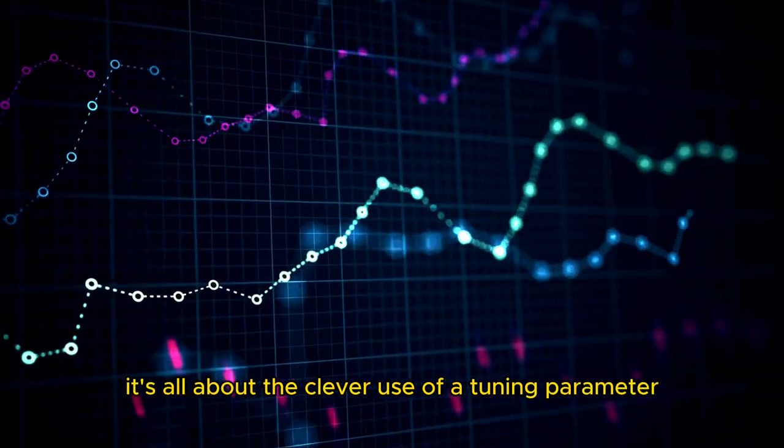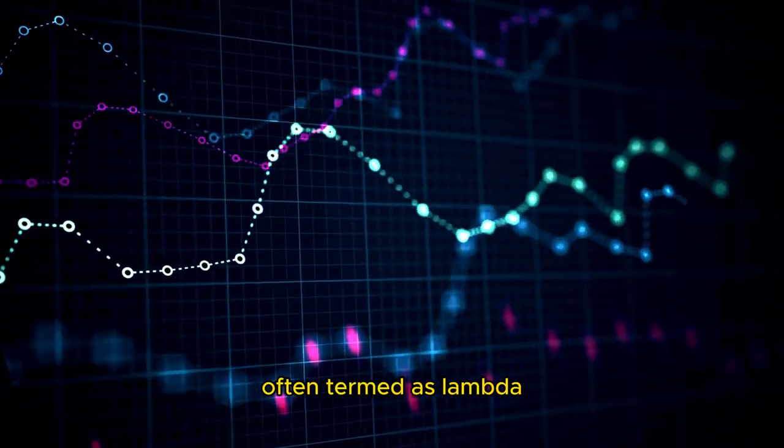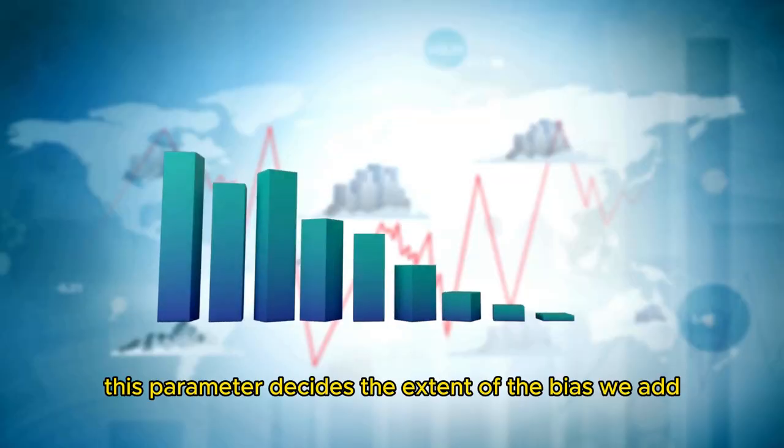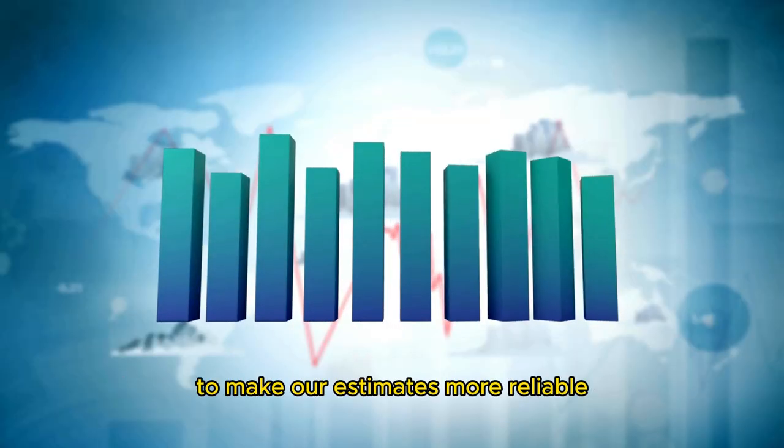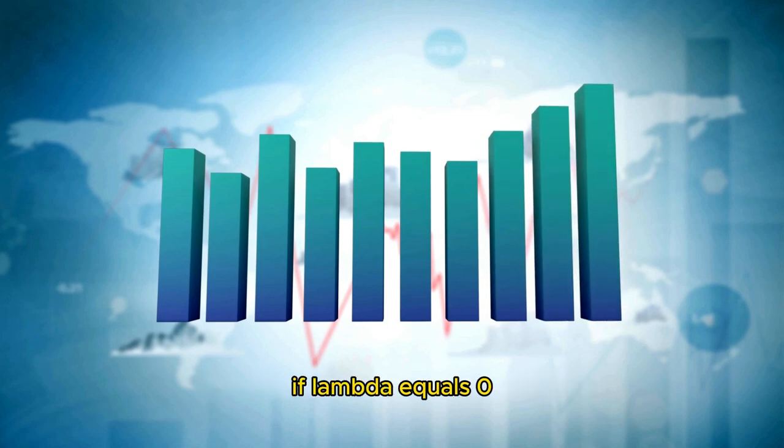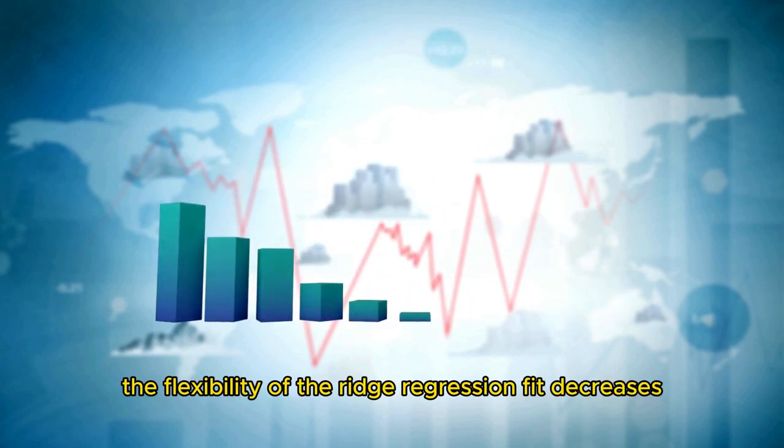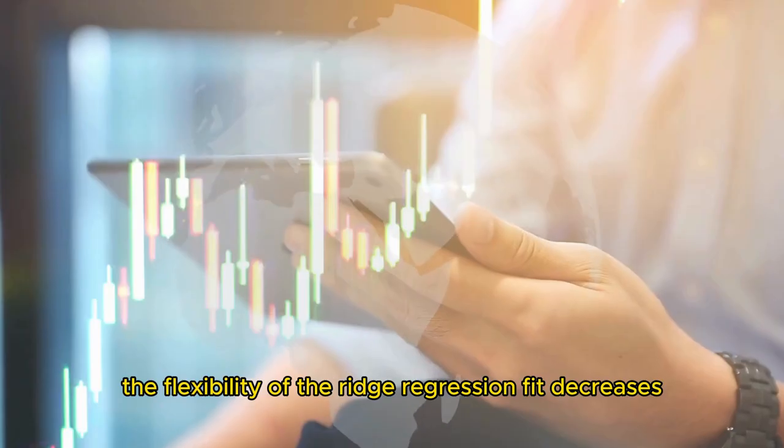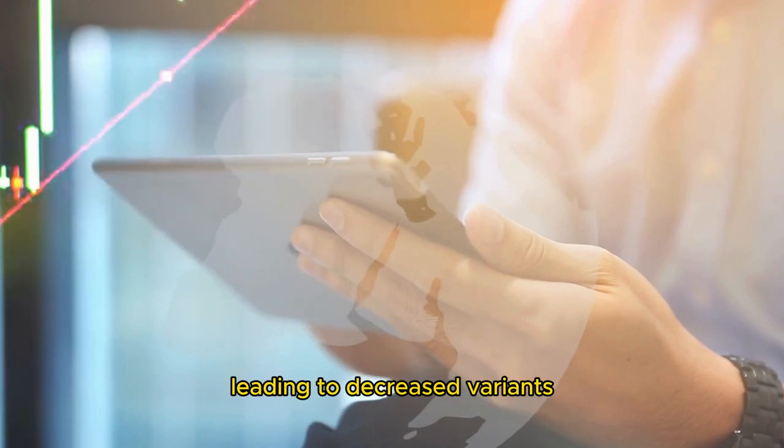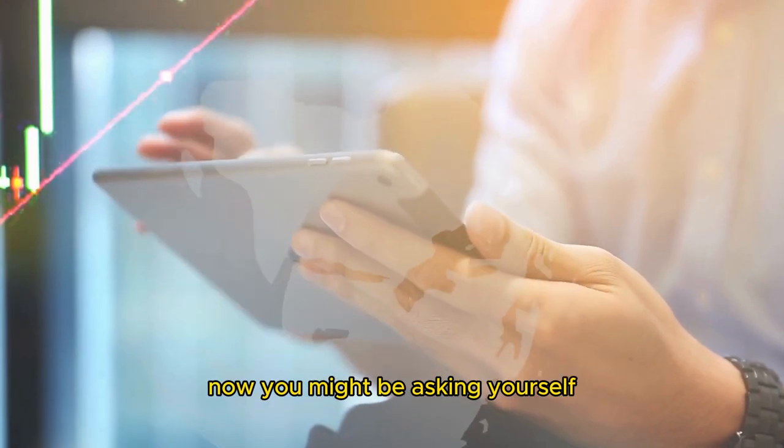But wait, how does it achieve this? It's all about the clever use of a tuning parameter, often termed as lambda. This parameter decides the extent of the bias we add to make our estimates more reliable. If lambda equals zero, we get the least squares estimates. As lambda increases, the flexibility of the ridge regression fit decreases, leading to decreased variance but increased bias.